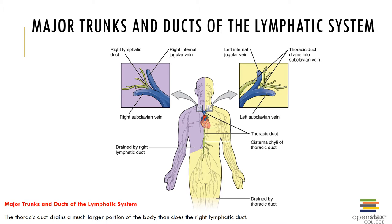Superficial lymph-collecting vessels are located in the subcutaneous layer deep to the skin, in the areolar tissues of the mucous membranes lining the digestive, respiratory, urinary, and reproductive tracts, and in the areolar tissues of the serous membranes lining the pleural, pericardial, and peritoneal membranes. There are also deep lymph-collecting vessels that accompany the deep arteries and veins supplying skeletal muscles and other organs of the neck, limbs, trunk, and the walls of visceral organs.